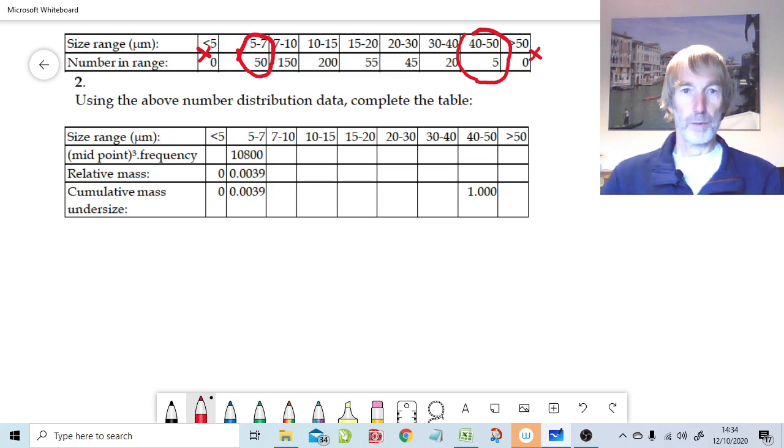So that's what we're starting off with. The book, or the problems at the end of Chapter 2 in the book, require three things to be calculated. The midpoint cubed times by the frequency of particles, that's the number of particles. We calculate the relative mass, and then from that, the cumulative mass.